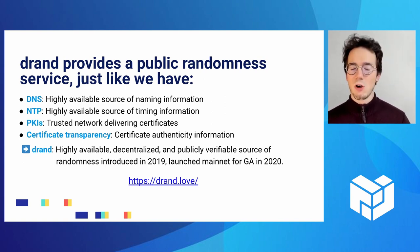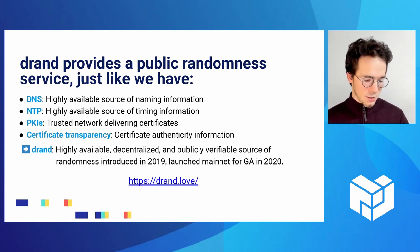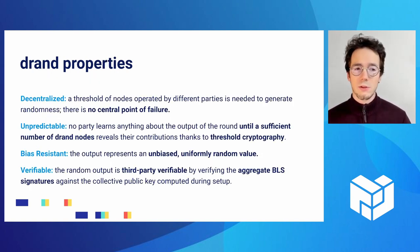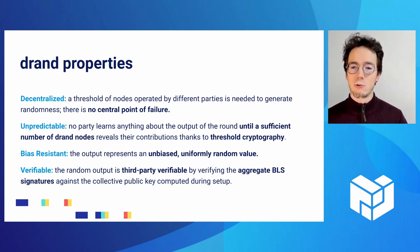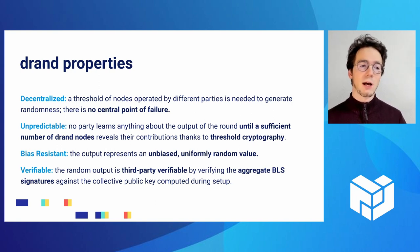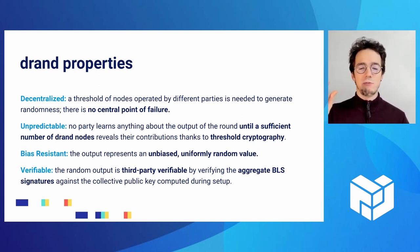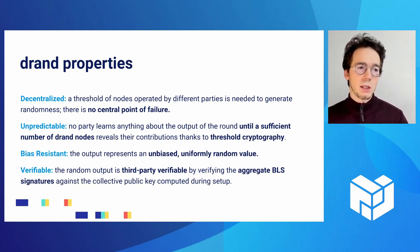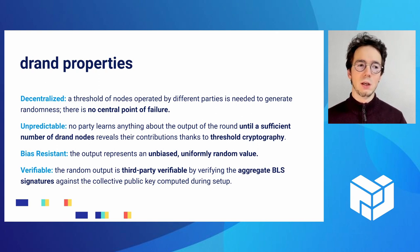Just like you have DNS servers, NTP servers, and certificate transparency logs, you have DRUN that can provide random beacons. The nice thing about DRUN is that it's fully decentralized — you only need a threshold of nodes to be working as intended for the whole randomness to be safe, unpredictable, and bias-resistant. It's also verifiable: you can take DRUN beacons and verify them by checking a BLS signature against a given public key for the League of Entropy.